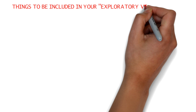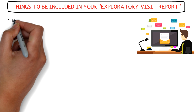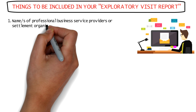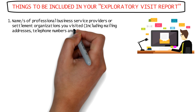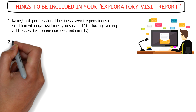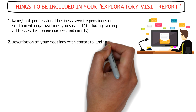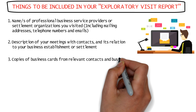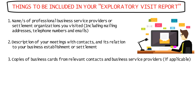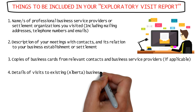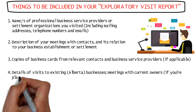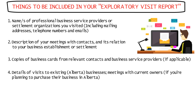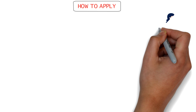The exploratory visit report must include: the names of professional business service providers or settlement organizations you visited, including mailing addresses, telephone numbers, and emails; a description of the activity or meeting and how it relates to your business establishment or settlement; copies of business cards collected from relevant people; and details of visits to existing business locations and meetings with current owners, if you're planning to purchase an existing business, including the business name, location, and current owners' names and contact details.